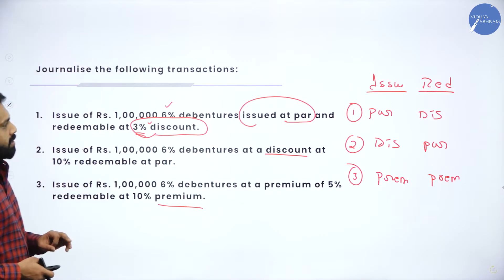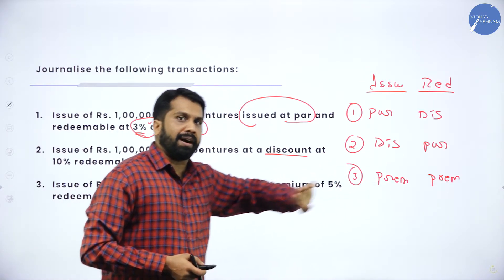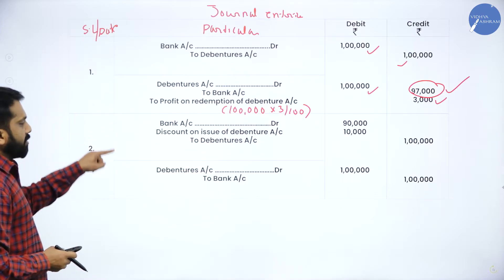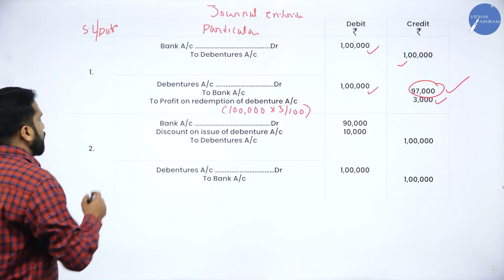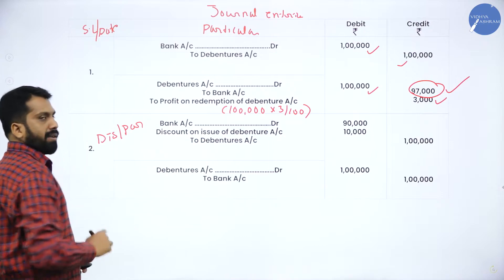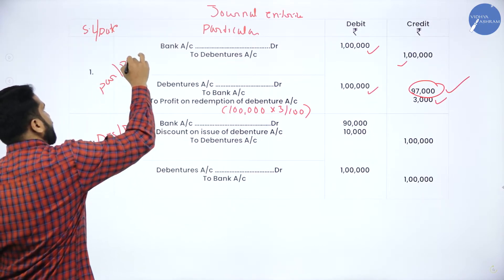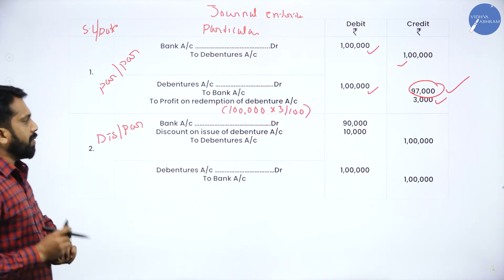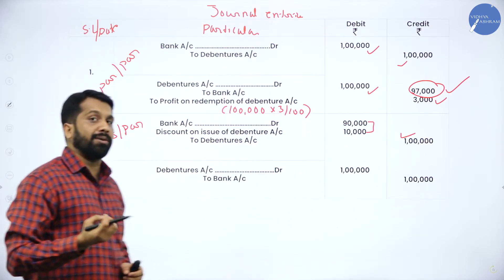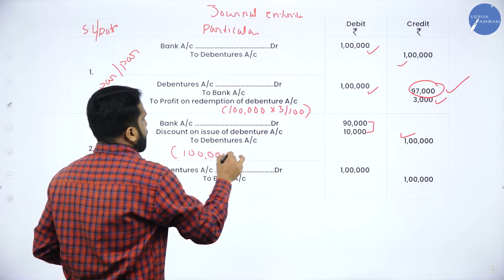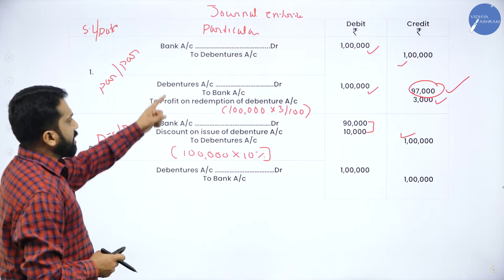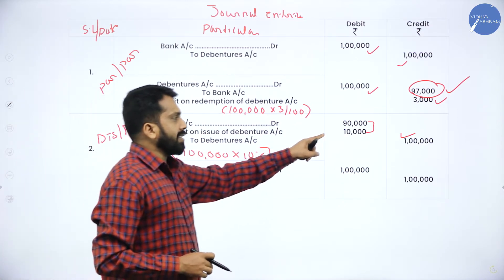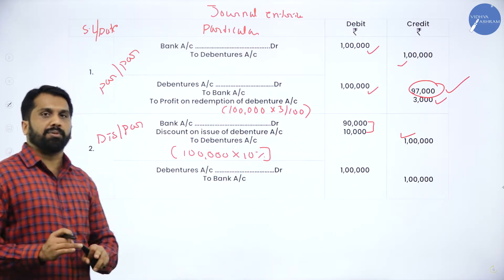We will go for the second one. Second one is: issued at discount, redeemable at par. Discount at 10%, value is one lakh. Write down the journal entry. Remember, the first one was issued at par and redeemable at par — while seeing the heading, you have to remember these things. Journal entry — copy paste. One lakh; in that one lakh, how much is discount? 10%. One lakh multiplied by 10% gives 10,000. So you have written one lakh 90,000 plus 10,000. Debenture to bank account: one lakh and one lakh.